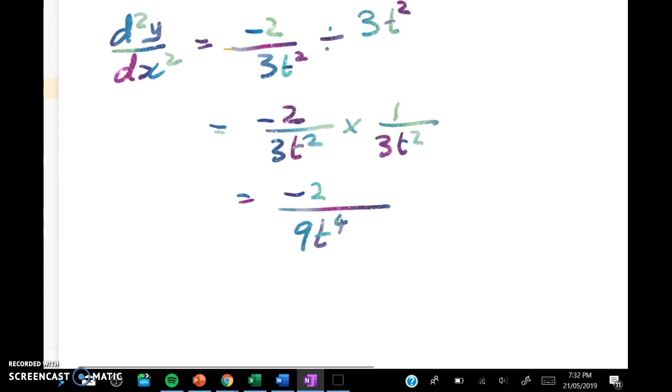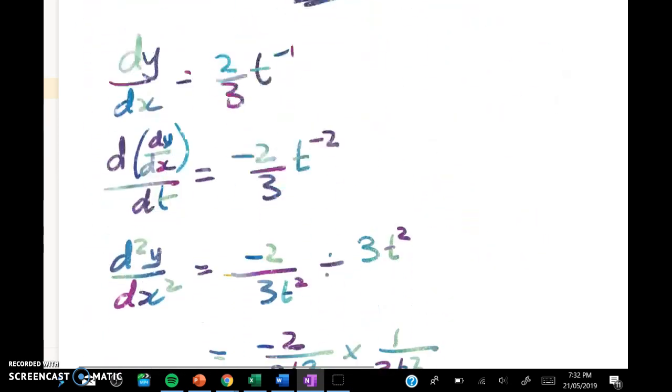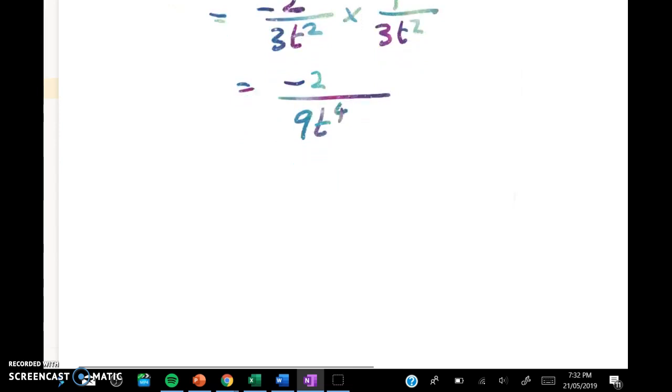What do we have to show now? Let's go right back to the question and have a look. Well we have to show that the second derivative divided by the first derivative to the power of 4 is a constant. So let's do some substitution.